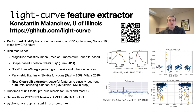The code is very well tested and already used by at least three ZTF alert brokers, including Ampel, Antares, and Fink. And it is pip installable — you don't need Rust, you just need Python and type pip install light-curve to use it.